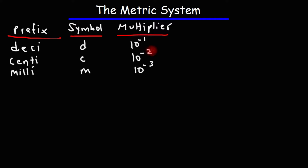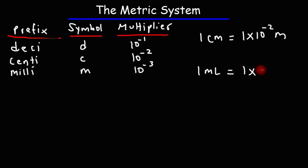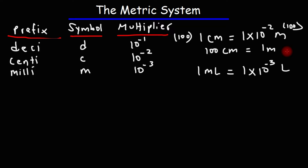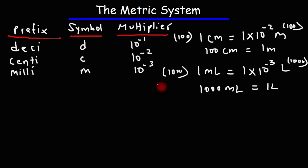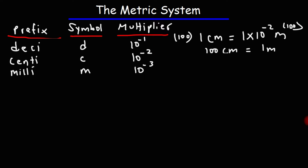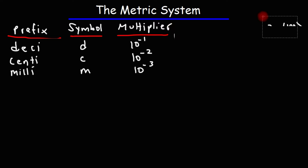Think about how we can write a conversion factor with this information. 1 centimeter — always put a 1 in front of the prefix — 1 centimeter is 1 times 10 to the minus 2 meters. Always attach the multiplier to the base unit. Similarly, 1 milliliter is 1 times 10 to the minus 3 liters. Once you write this conversion factor, you can alter it. If we multiply both sides by 100, we get that 100 centimeters equals 1 meter. And multiplying by 1,000 gives us 1,000 milliliters equals 1 liter.